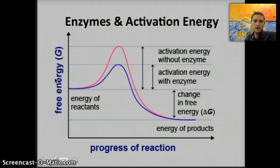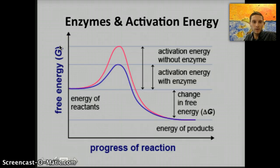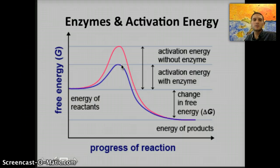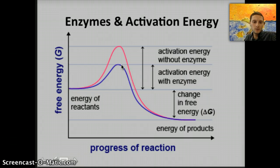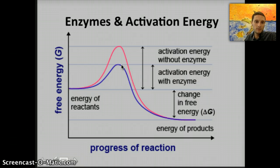Enzymes help to lower the activation energy of the chemical reactions they catalyze. This graph does a nice job of showing how the enzyme — the blue line — is reducing the amount of energy necessary for that reaction to occur, helping to speed up the progress of a reaction. The enzyme catalyzes a reaction in which the substrate binds to the active site and is altered to reach a transition state or converted into a product. The binding of that enzyme lowers the overall energy level and reduces the activation energy.